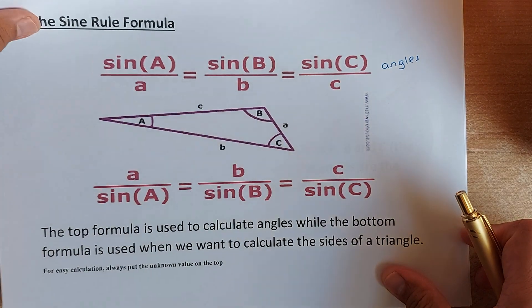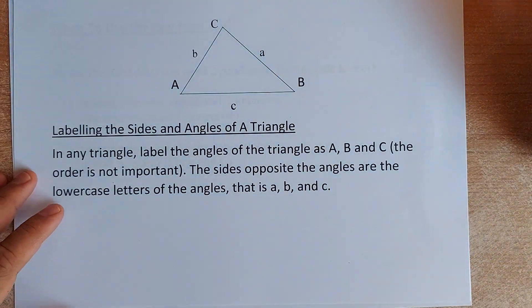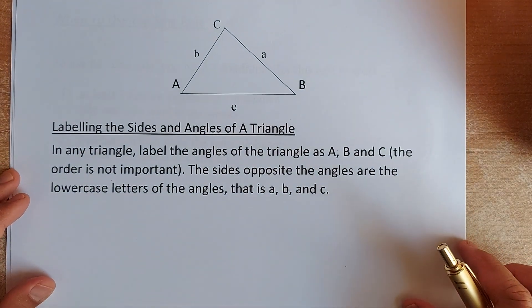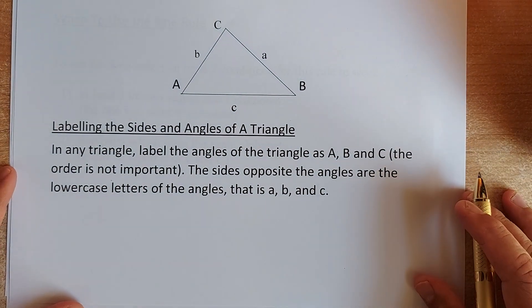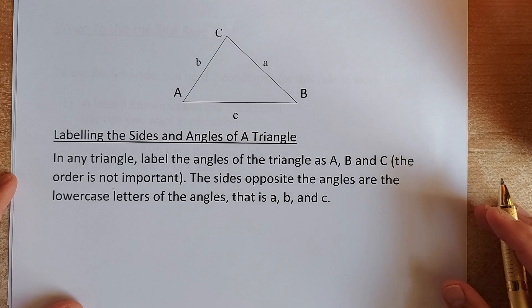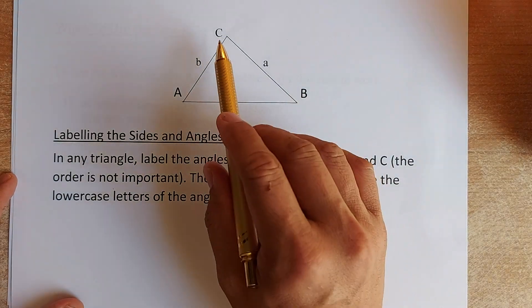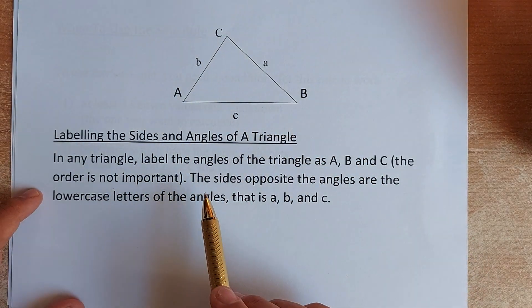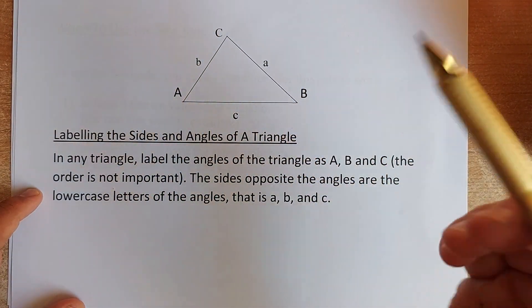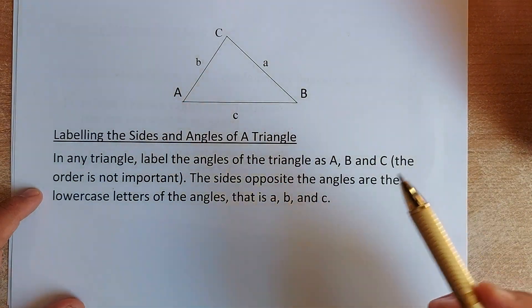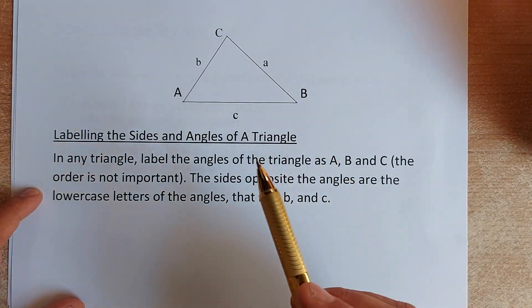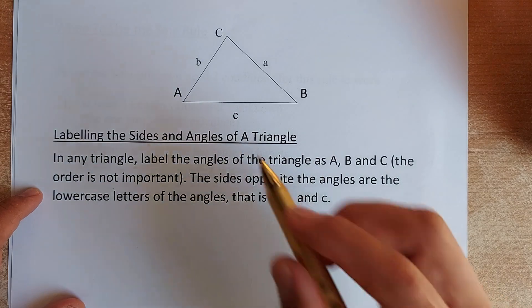We shall now look at some examples. We shall look at how to start a question. The first thing you need to do, you need to label the size and angles of a triangle. The first thing you do, you are going to label the angles as A, B and C. The order is not important. It could be A, B and C. It could be any order you want. But, the most important thing is you need to know the size opposite the angle is the lowercase.